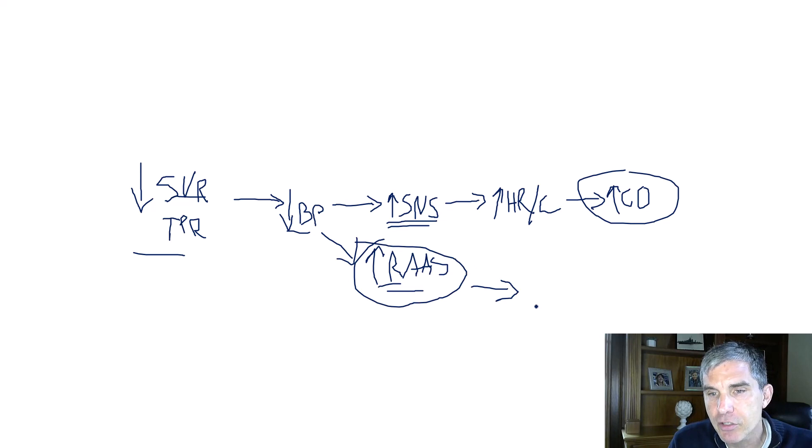And that's going to lead to the kidneys retaining sodium and water. Anytime the RAS is activated, the kidneys retain more sodium and water. The sympathetic nervous system can also cause retention of sodium and water.